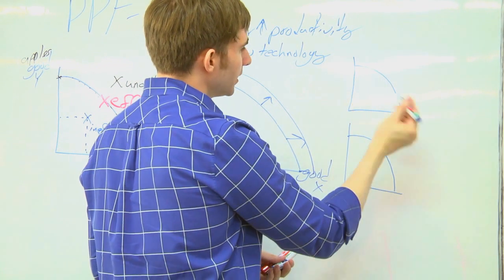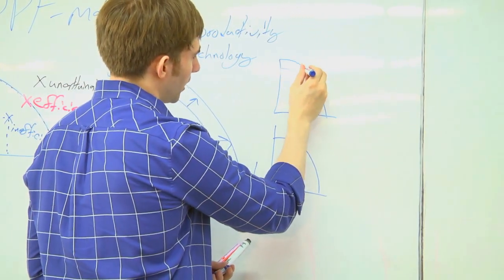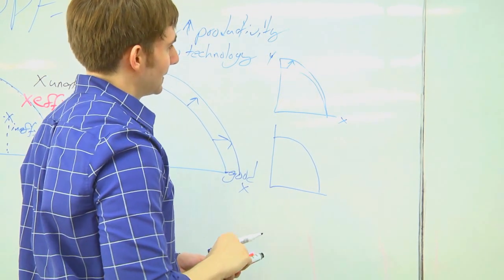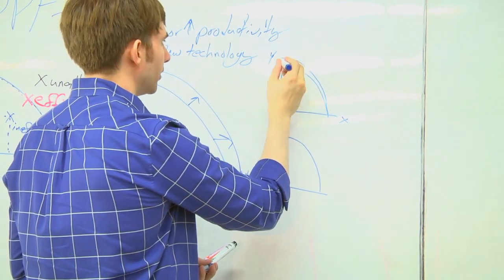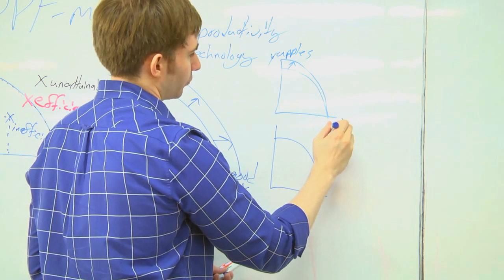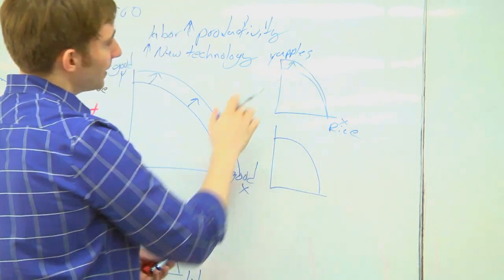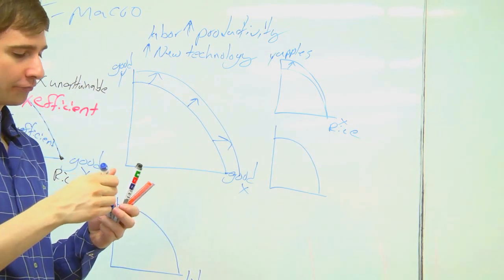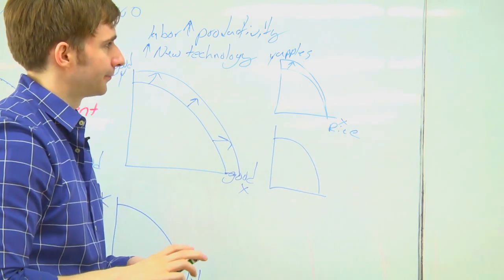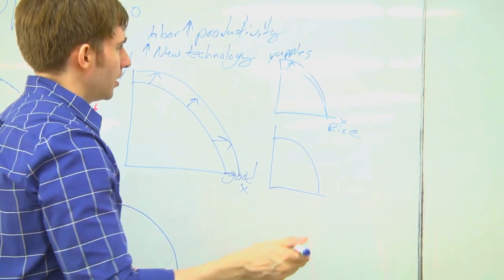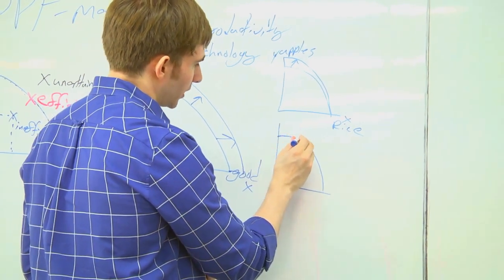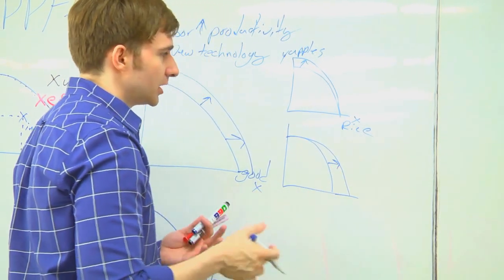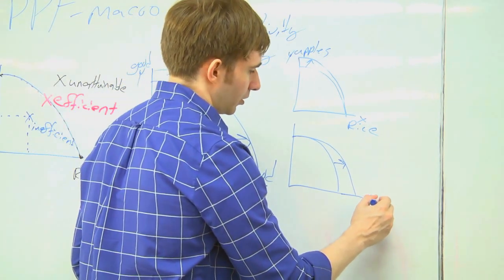What's something that could only shift one good but not the other? So if this is apples and that's rice, this might be technology specific just to apple farmers. A new fertilizer that only benefits apple farmers. It won't benefit the rice farmers. We could go the other way. If I just wanted to increase, maybe the invention of a new machine for collecting rice, processing rice.